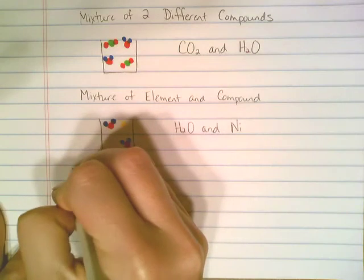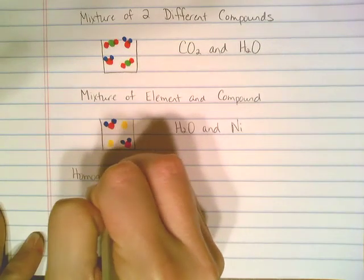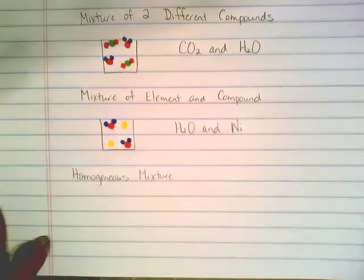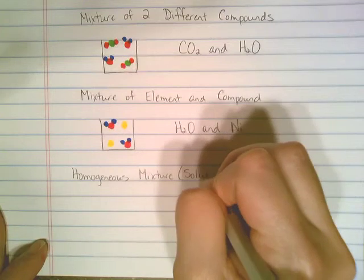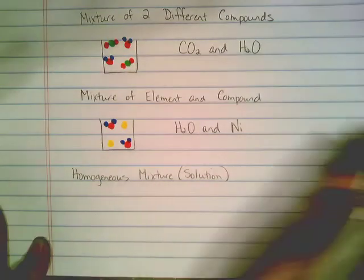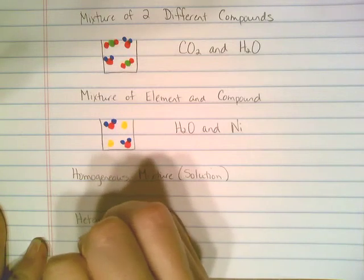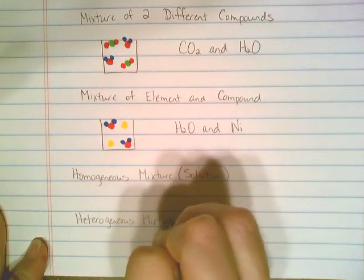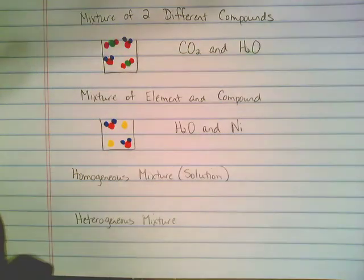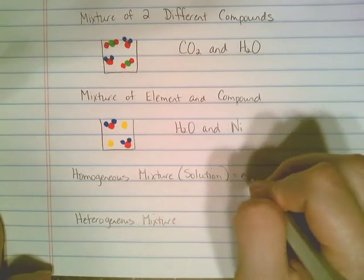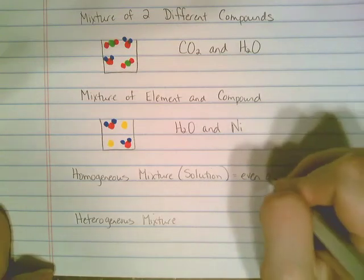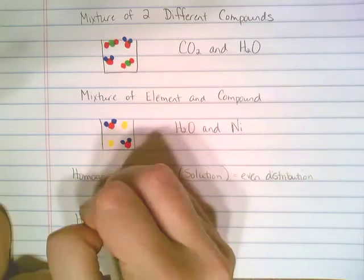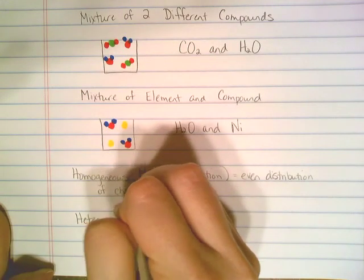You can have a homogeneous mixture — homogeneous mixtures are also called solutions — or you can have heterogeneous mixtures. For homogeneous mixtures, that's when you have even distribution of your chemicals in the mixture.